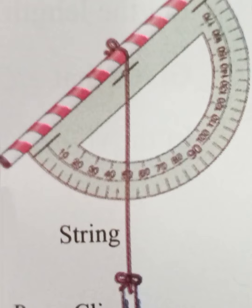Now let us see how to make a clinometer. Tie one end of a string to the middle of a straw and the other end of the string to a paperclip. Glue the straw to the base of a protractor so that the middle of the straw aligns with the center of the protractor.